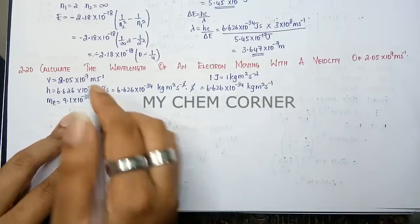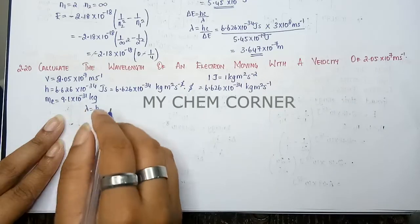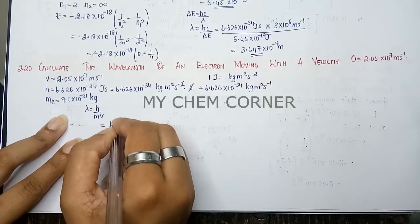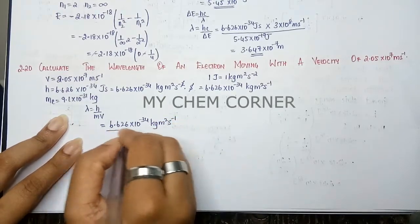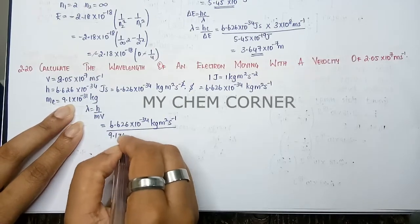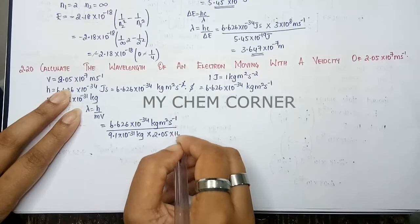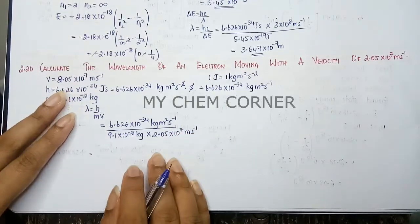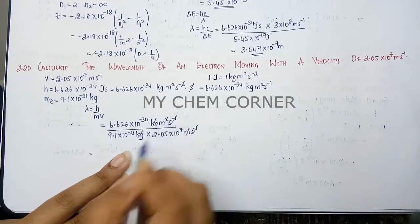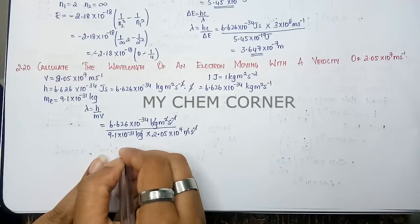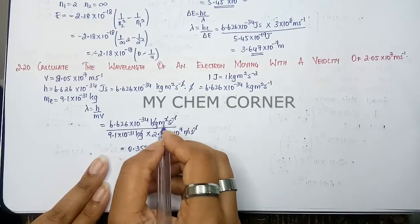The relation between wavelength and velocity is λ = h / (mv). Substituting: h = 6.626×10⁻³⁴ kg·m²·s⁻¹, mass of electron = 9.11×10⁻³¹ kg, and velocity = 2.05×10⁷ m·s⁻¹. Cancelling units: kg cancels with kg, s⁻¹ cancels, and one meter cancels. Simplifying the values gives 0.35518×10⁻¹⁰ meters.